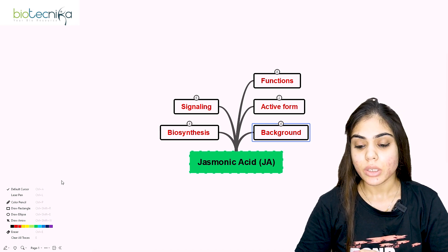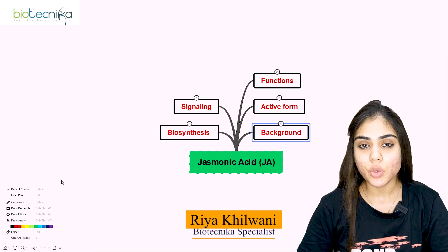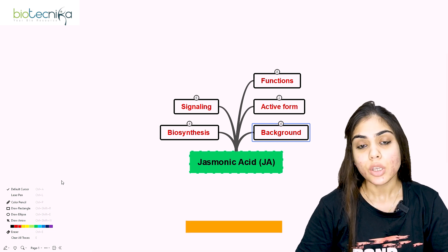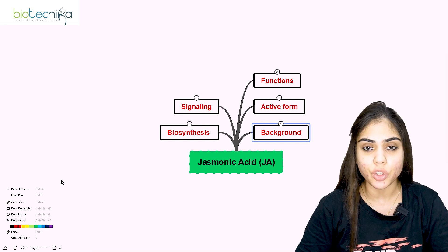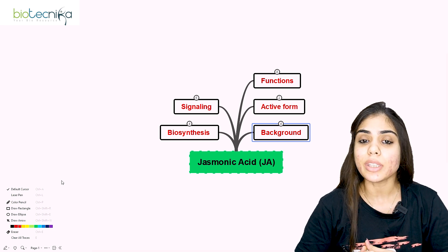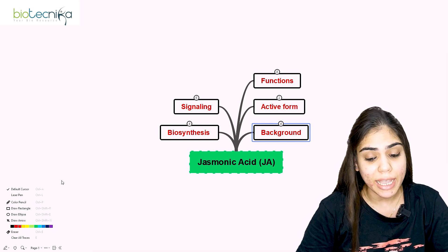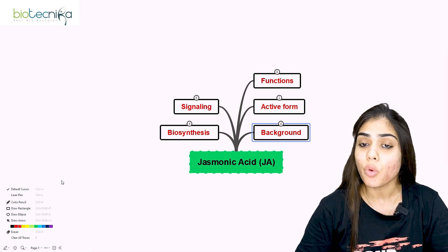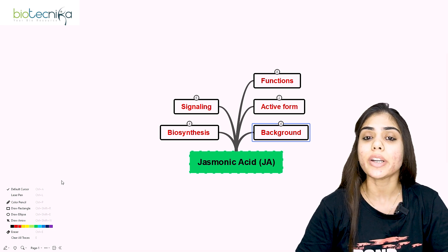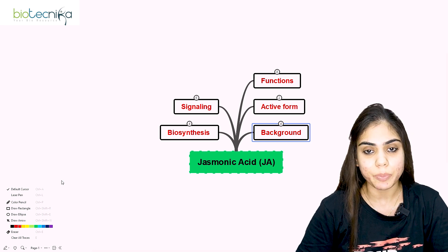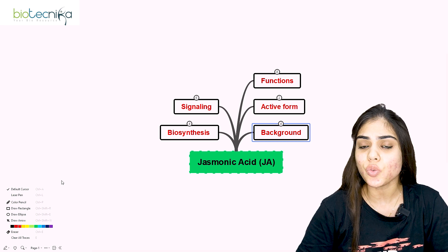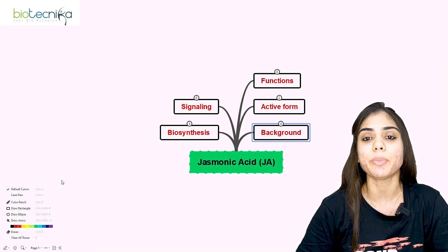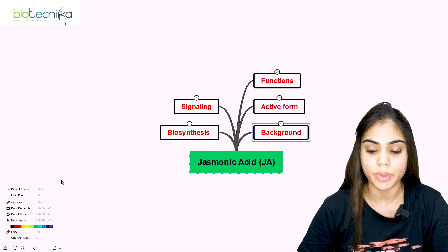Hello everyone, welcome to Biotechnica. Today I've come up with the topic of phytohormones, where I'll help you understand different plant growth regulators that regulate plant survival, growth, and development. We are going to see eight different phytohormones necessary for plant development, covering biosynthetic mechanisms, signaling, functions, transport mechanisms, inhibitors, and regulation of signaling pathways. You can expect direct questions in Part B as well as experimental-based questions in Part C, including match-the-following and combination-based formats.